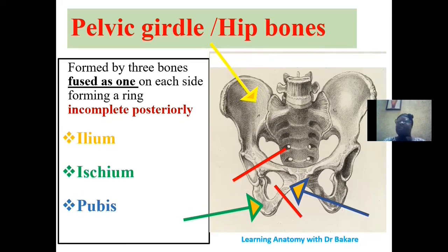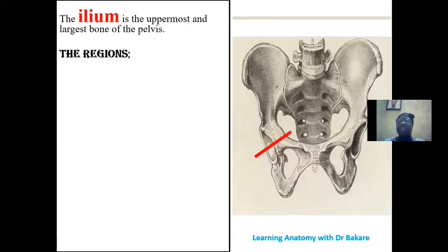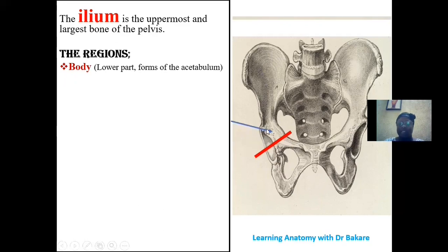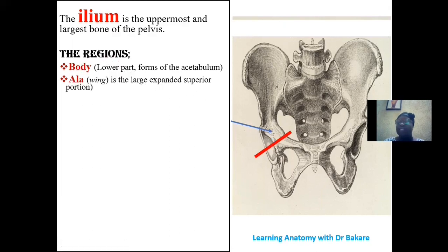The ilium is the upper, most superior part of the pelvic girdle and is the largest of the three bones. It is made up of the body, which is the lower part of the ilium and contributes to the formation of the acetabulum — an indentation that receives the head of the femur, where the lower limb attaches. The second region is the ala, also referred to as the wing, which is the upper expanded superior region of the ilium, resembling the shape of a butterfly wing.